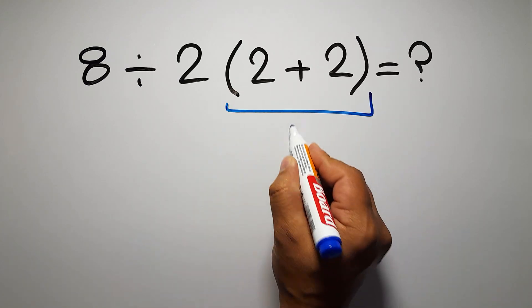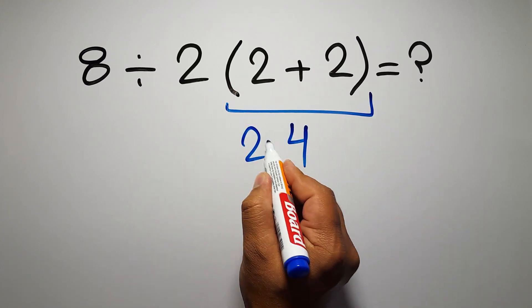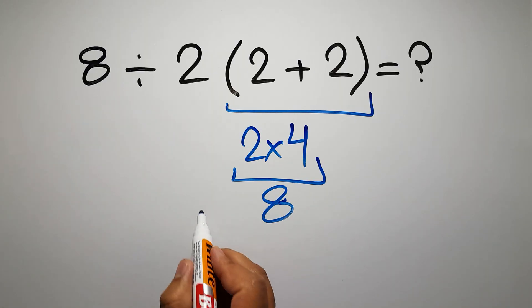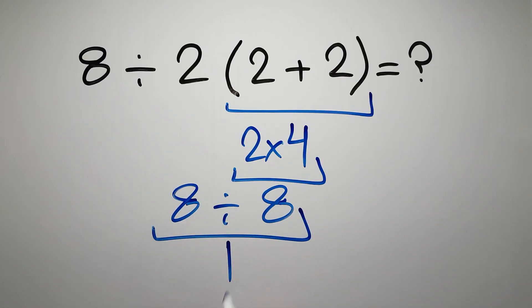2 plus 2 is just 4, and 2 times 4 gives us 8, so 8 divided by 8 equals 1.